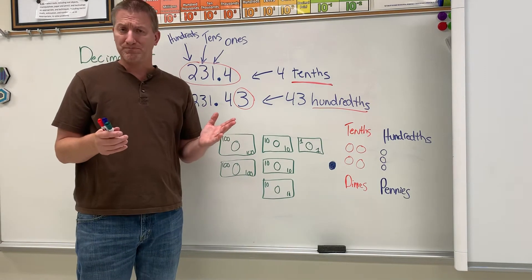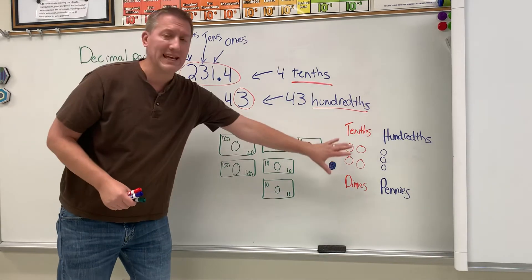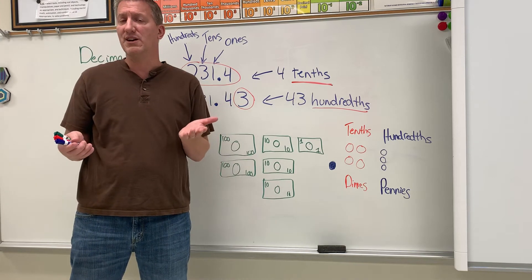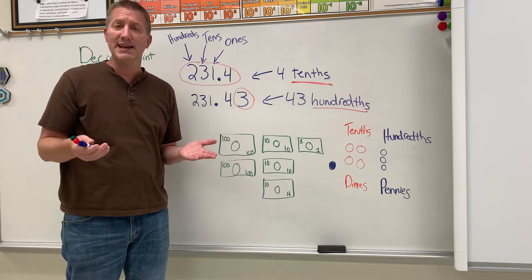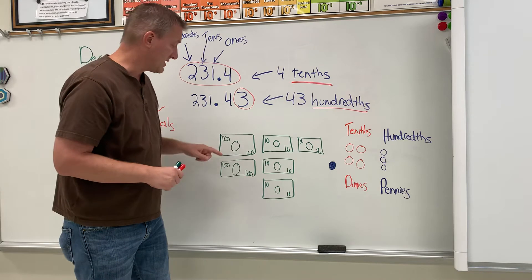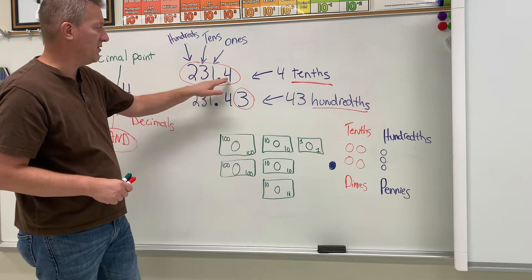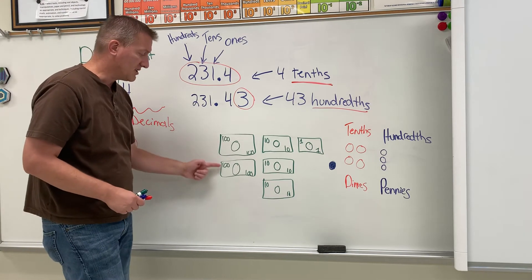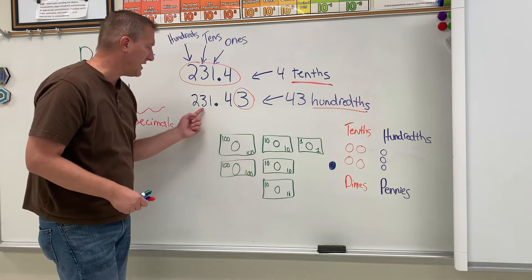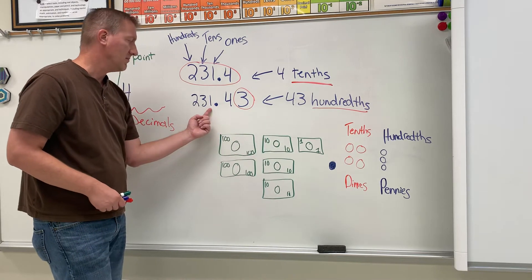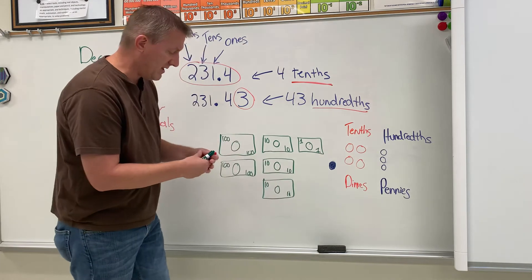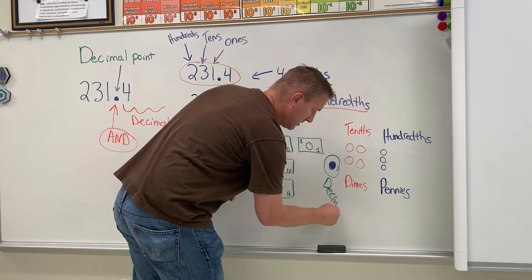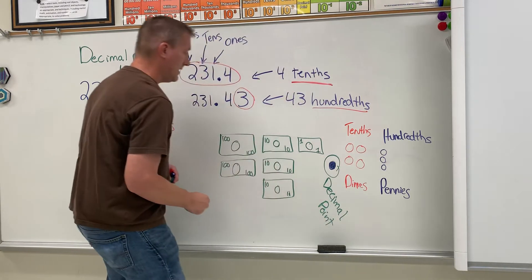When I'm talking about it in class, I refer to money a lot because a lot of people know money. You might not know tenths and hundredths yet, but really you've dealt with them your whole life — whenever you deal with money, you're dealing with tenths and hundredths. So I have the same number up here: '231 and forty-three hundredths.' How does that look in money? There are two hundreds, three tens, one one, and here's your decimal point — you're gonna say 'and.'